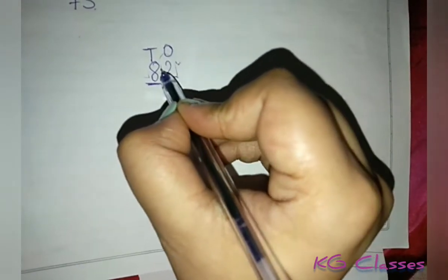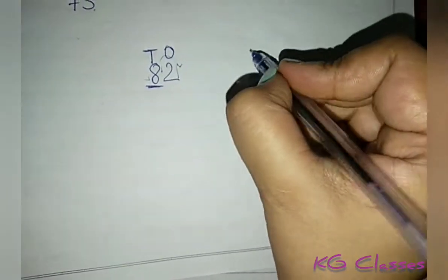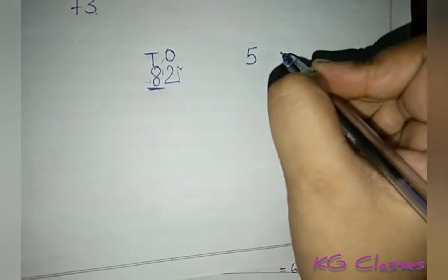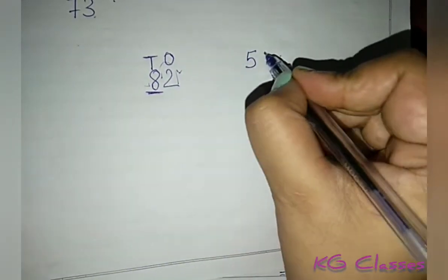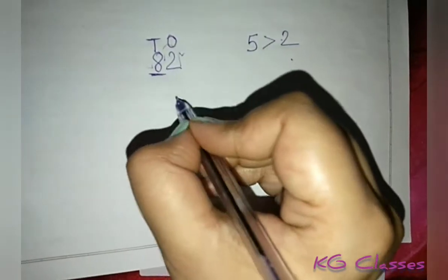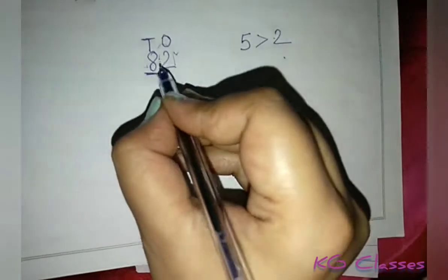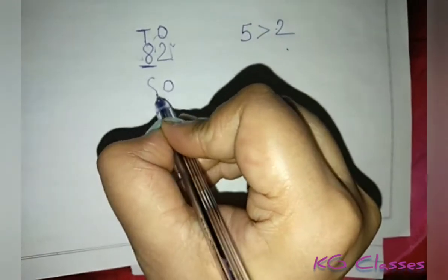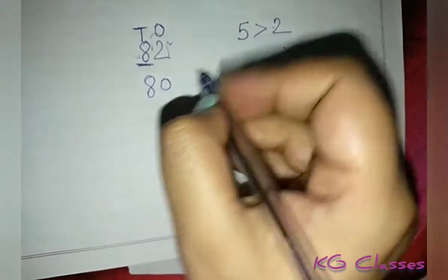We will see the ones place. If the ones digit is less than 5, it is small. So the ones place becomes 0 and the tens place stays as it is.